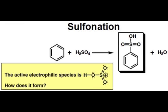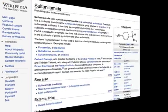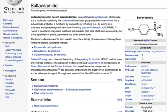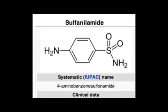Aromatic sulfonic acids are valuable intermediates in the preparation of dyes and pharmaceuticals. The sulfa drug sulfanilamide was one of the first useful antibiotics. Drugs such as these are prepared using aromatic sulfonation as the key step.